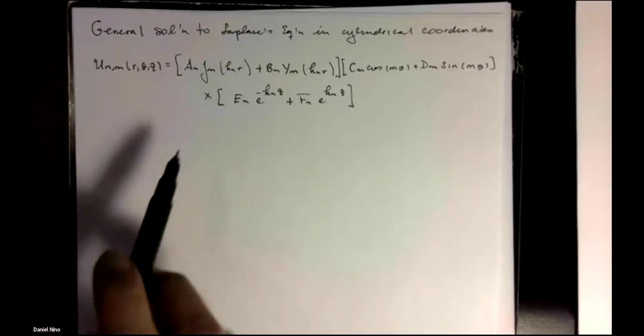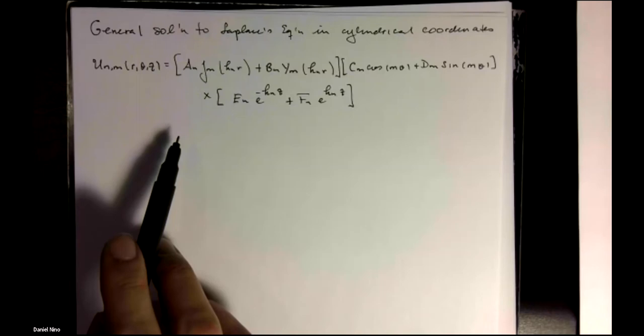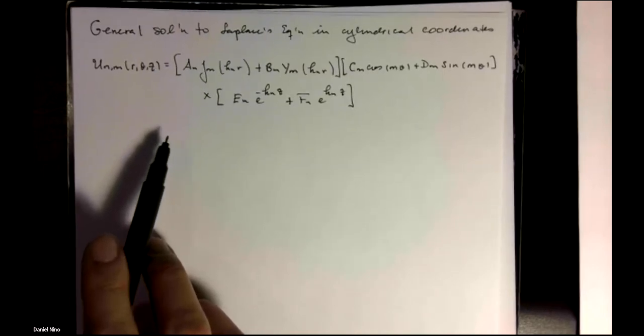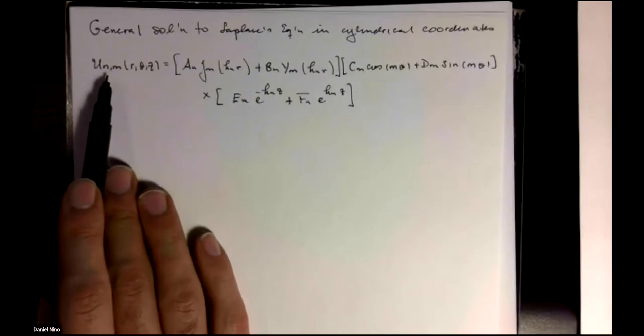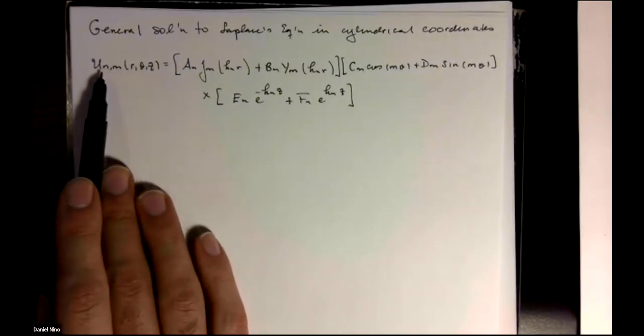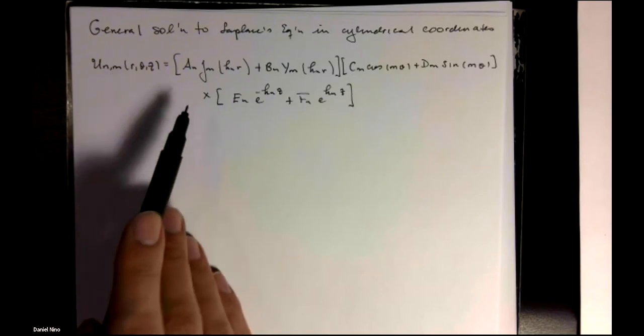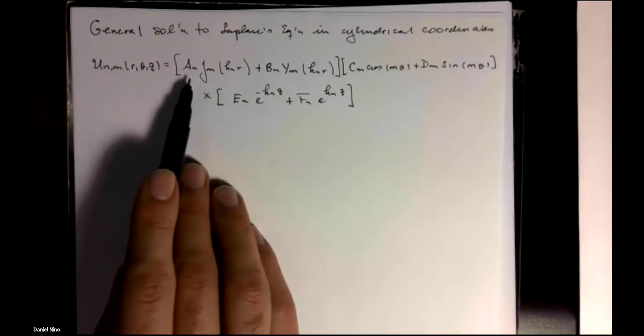In the last video we developed the general solution to Laplace's equation in cylindrical coordinates where we found infinitely many solutions that depend on two numbers n and m, which has the following form.